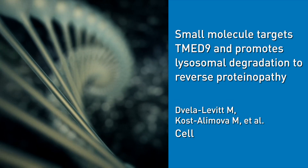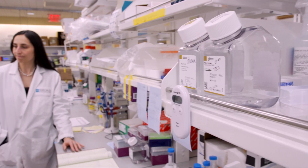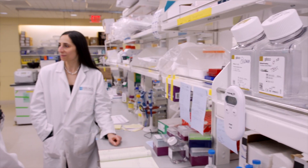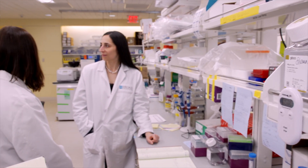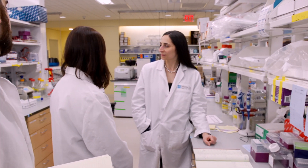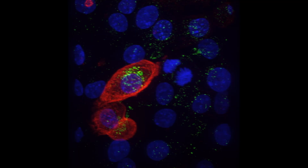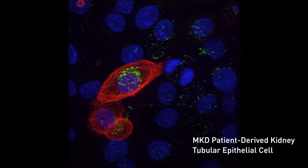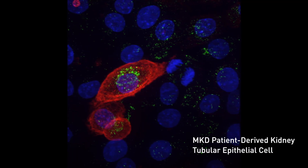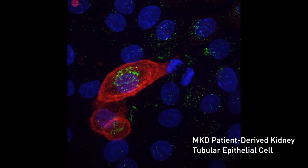Mucin-1 kidney disease is caused by a mutation in the Mucin-1 gene. It is a single insertion, usually of a cytosine, in the VNTR region of this gene. It causes a frameshift and an early stop codon before the transmembrane domain, which basically results in a toxic neoprotein.